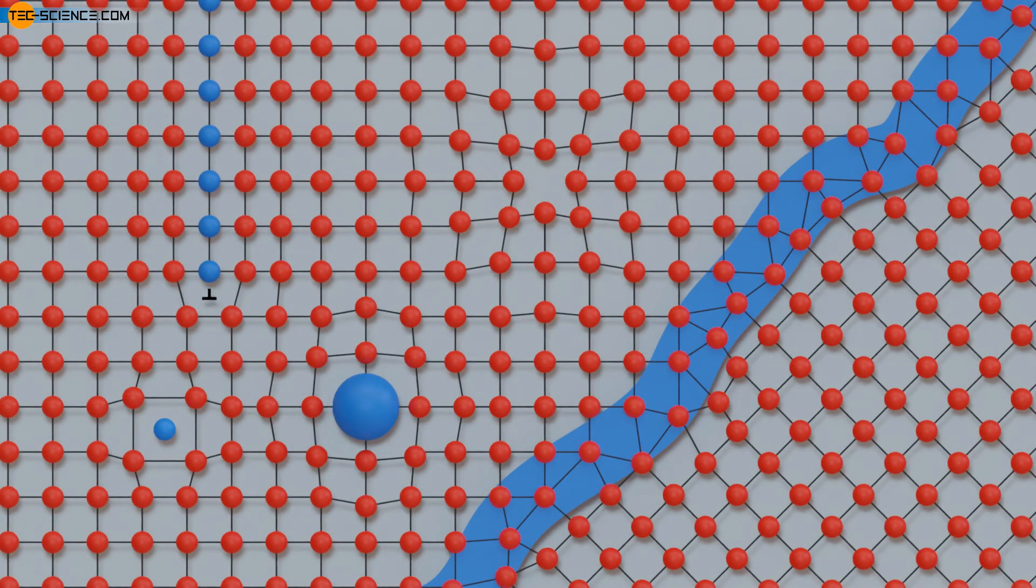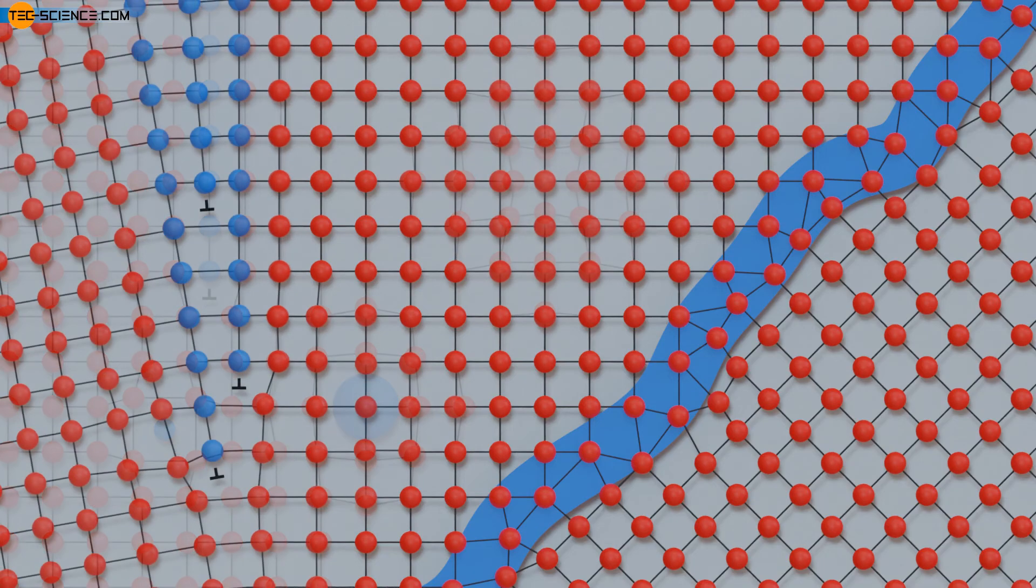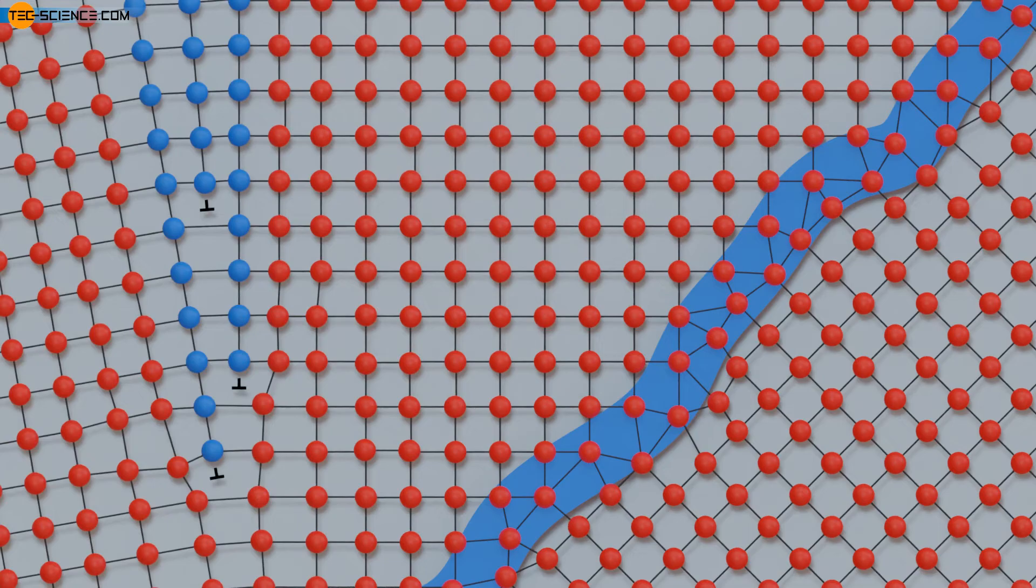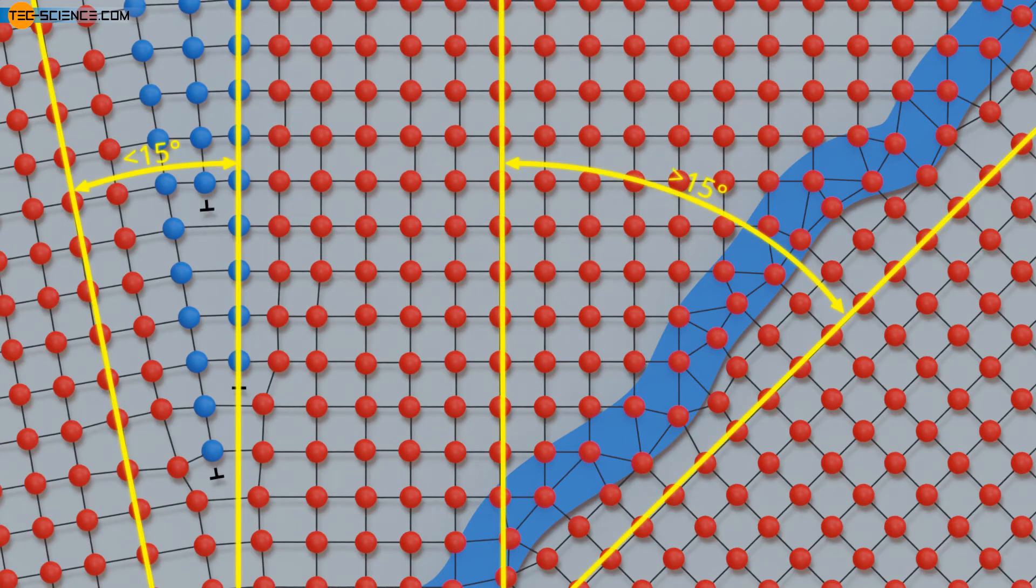A deviation of the crystal orientation can also occur when several dislocations lie on top of each other. Since this defect only changes the lattice orientation by a few degrees, usually less than 15 degrees, it is also referred to as a low-angle grain boundary. For better differentiation, the grain boundaries described previously are often referred to as high-angle grain boundaries.